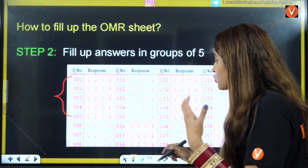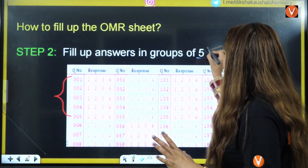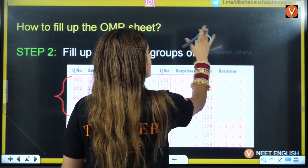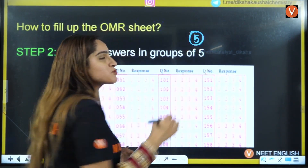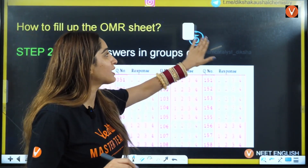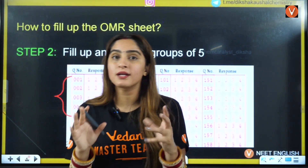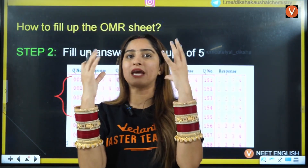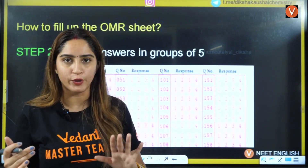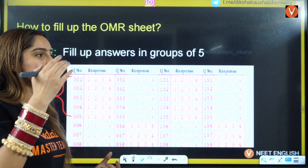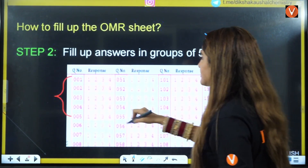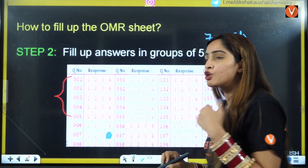My recommended strategy is section-wise filling — solving a small batch of questions and then filling their bubbles. You can choose the batch size based on your personality: if you're clumsy and prone to silly mistakes, go with 5 questions per batch; if you stay calm under pressure and are accurate, 10 questions per batch works well. For example, solve 10 questions, then go back and fill those 10 bubbles.